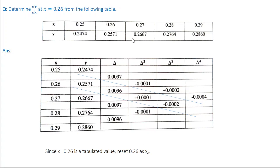We have 5 data points, which means we need difference terms up to order 5−1 = 4, so we find up to the fourth-order difference. The table has columns for x, y, first difference, second difference, third difference, and fourth difference. The difference table is now constructed.